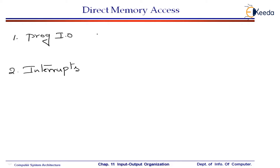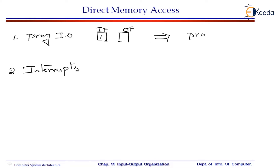In programmed I/O, let us recall that the CPU is watching the flags. There is an input flag and there is an output flag. If one of the flags are set, then the CPU is going to execute one program, and then the transfer will be made, which is called programmed I/O.